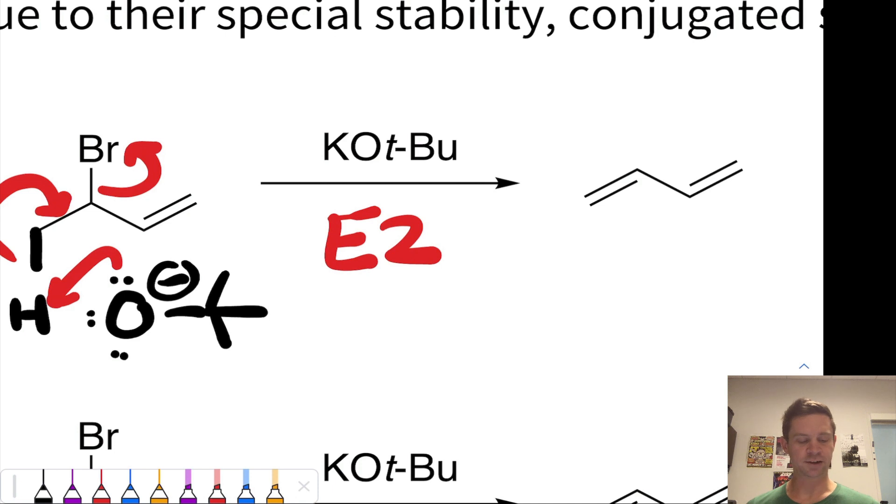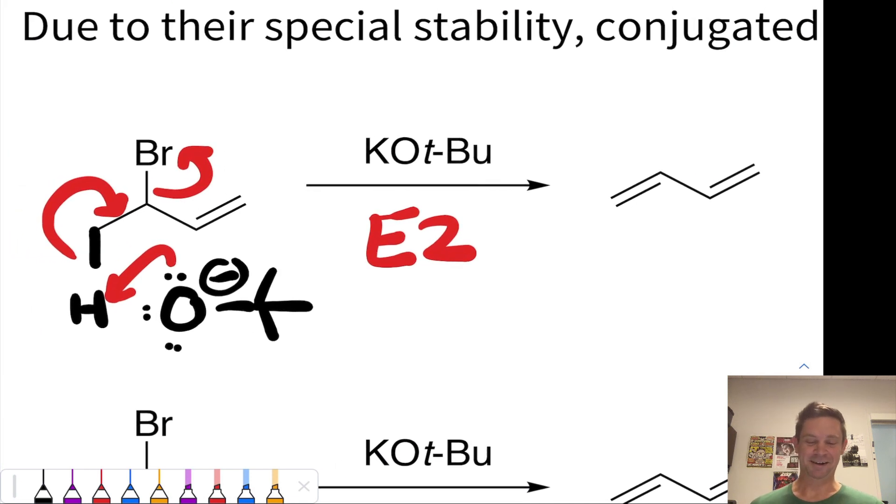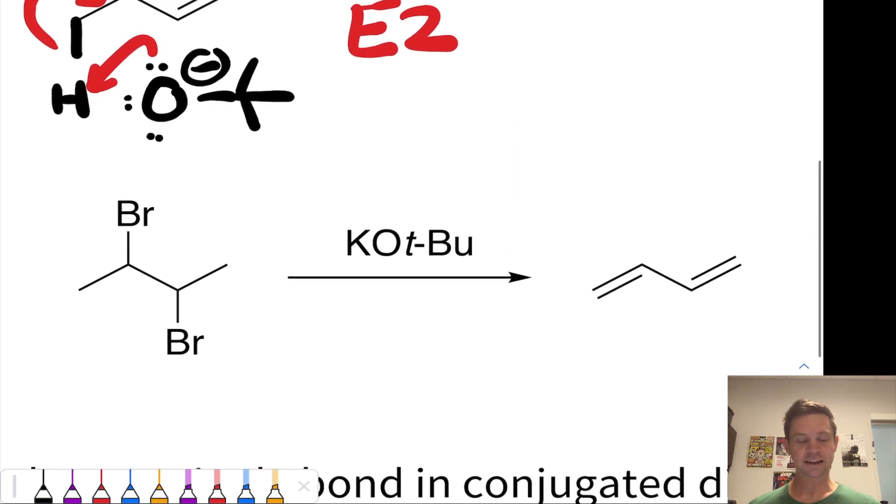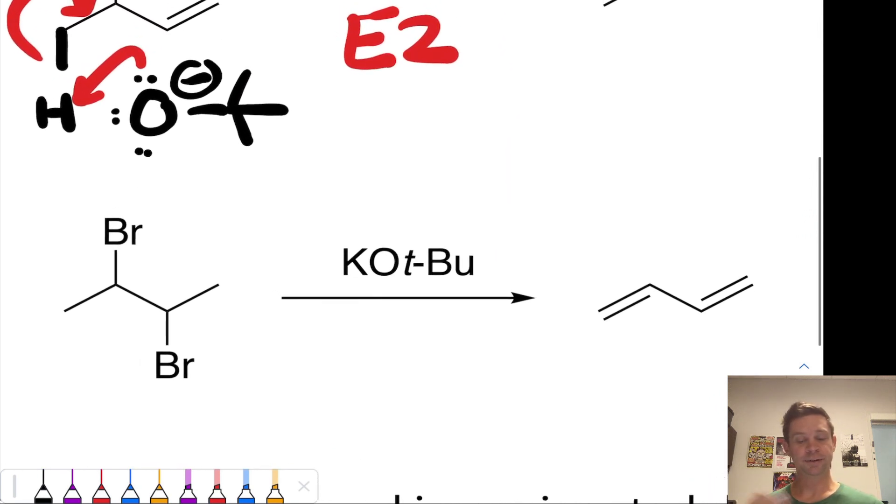Now, here, pretty much the conjugated diene is the only possibility. There's no other possible elimination that could take place here. The bottom case is a little bit more interesting in that respect. So we see here, again, we're using potassium tert-butoxide as a base and trying to achieve elimination to the conjugated diene, 1,3-butadiene.